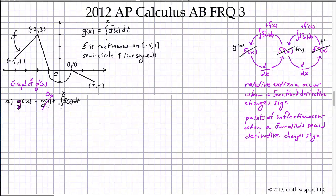We're finding the signed area because this function is given in geometric terms. Starting at 1 and finding the change in signed area going from 1 to 2, we have a triangle with a width of 1 and a height of negative one-half. So one-half base times height gives us a signed area of negative one-quarter.